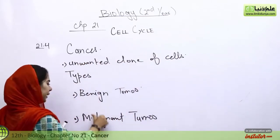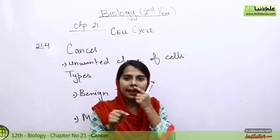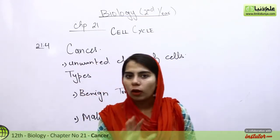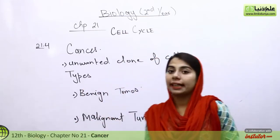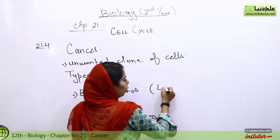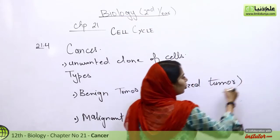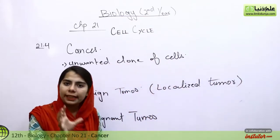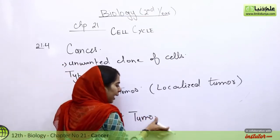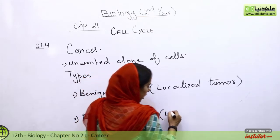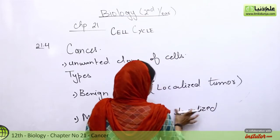Benign tumor kya hota hai — benign means localized. Agar ek jagah per unwanted clone of cells ugata hai to woh localized tumor hota hai. So it is a localized tumor.